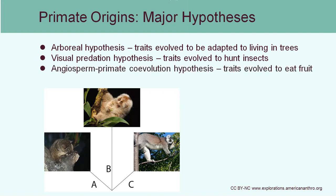Finally, the angiosperm primate co-evolution hypothesis says that our early primate ancestors actually evolved to eat fruit. One interesting idea is that if you look at fruit, a lot of times the unripe fruit is still green or yellow, while the ripe fruit is a brighter color like red. So this could explain why color vision evolved, as well as some of those other traits related to living in the trees.